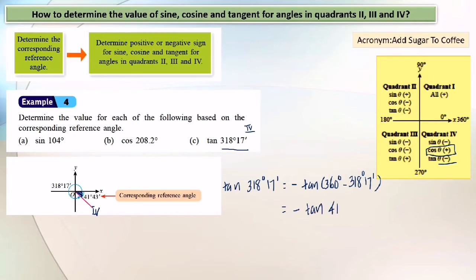Negative tangent 41 degrees 43 minutes. Key into your calculator tangent 41 degrees 43 minutes and you will obtain 0.8915. So the answer is negative 0.8915.